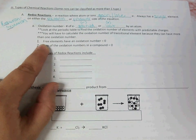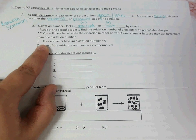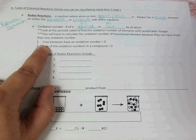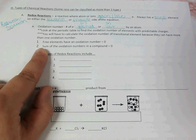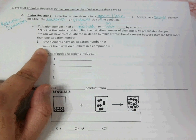Free elements, meaning just an element, exactly how it is on the periodic table, if it shows up in a reaction, has an oxidation number of zero, and the sum of the oxidation numbers in a compound also equals zero, meaning there are no charges in your compounds.